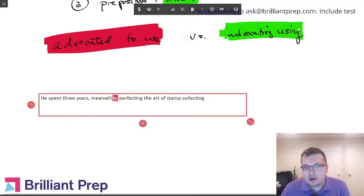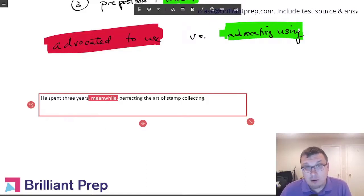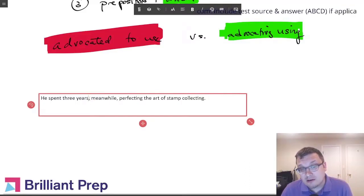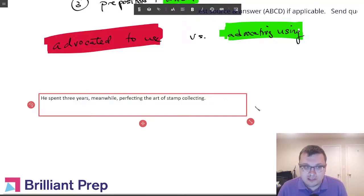So here's a case where you have meanwhile in between commas—totally fine. It's kind of like other words like however, in addition, therefore, where when you insert that into the middle of a complete sentence like this, you're going to want to surround it with commas. Just make sure that you're not using it to separate two complete sentences.